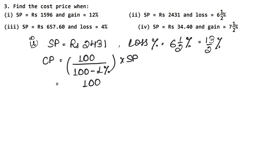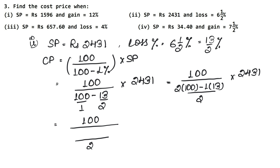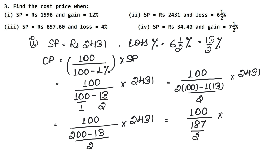So CP = 100 upon (100 minus 13/2) into 2431. Since there is nothing below 100, we write 1 below it. Taking LCM of 2: 2 into 100 minus 1 into 13, giving us 100 upon (200 minus 13) upon 2, into 2431. That becomes 100 upon (187 upon 2) into 2431.